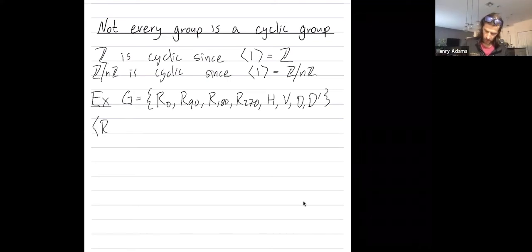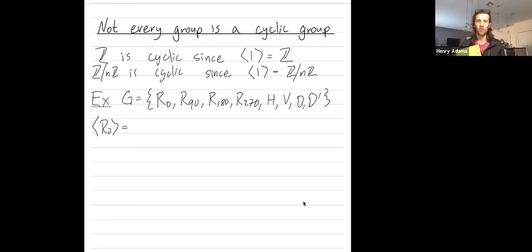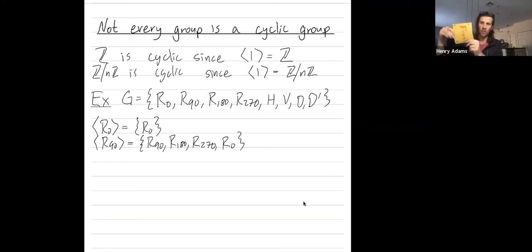So let's look at all of the cyclic subgroups. If I rotate by zero, no matter how many times I repeat that operation, I just stay where I am. If I rotate by 90 degrees, I can generate all of the rotations, but nothing else. I can't generate any of the flips when I rotate by 90 once or twice or three times or four times.